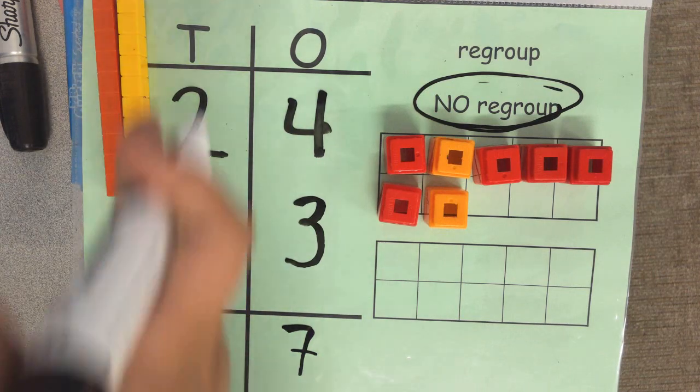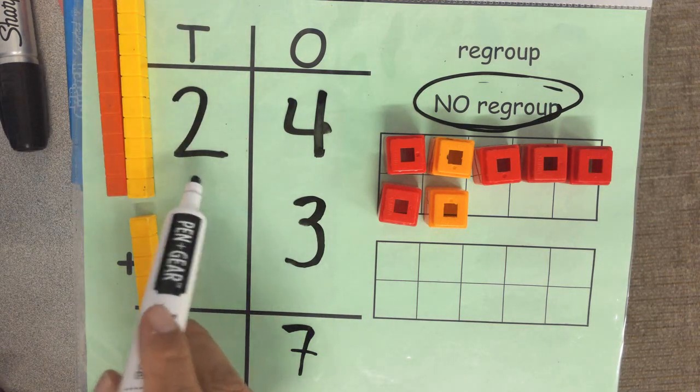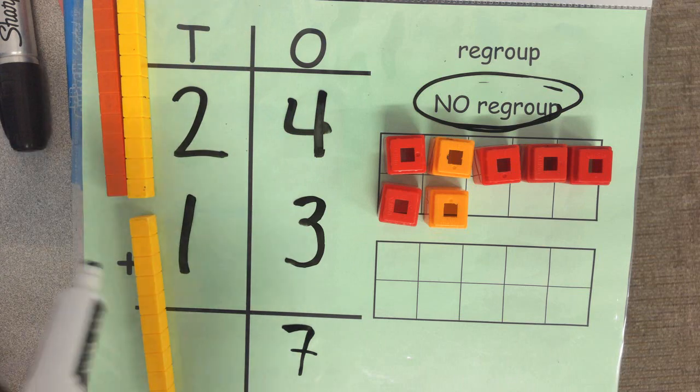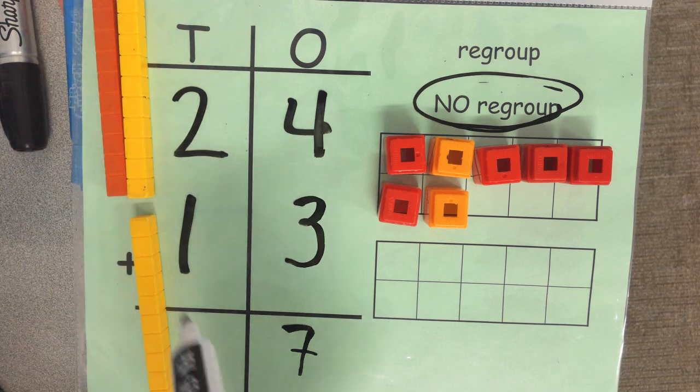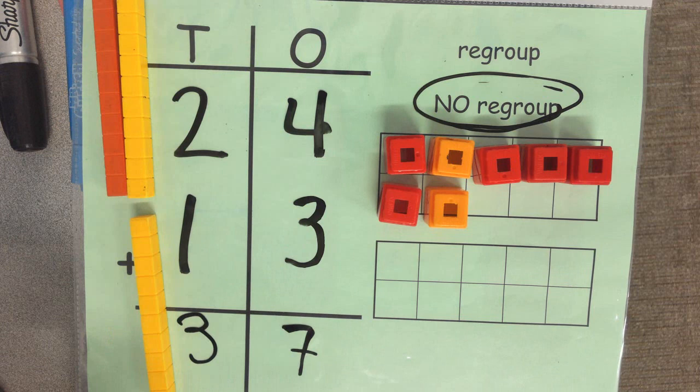Then I move on to the tens place. Two groups of 10. That's 2 plus one group of 10. That's another one. 2 plus 1 is 3. 37.